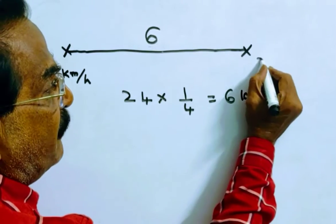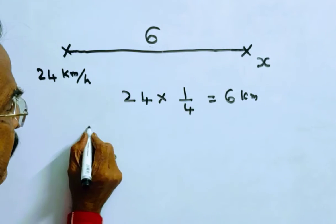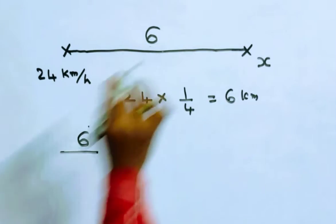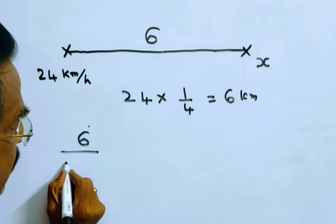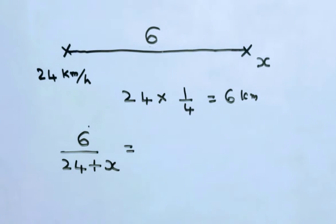say the speed of the woman x kmph, distance 6 km. These two are coming in the opposite direction, so distance by velocity, that is relative velocity. Distance by velocity is equal to time,